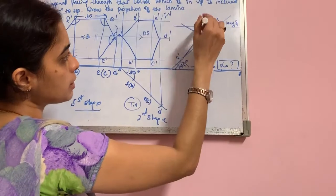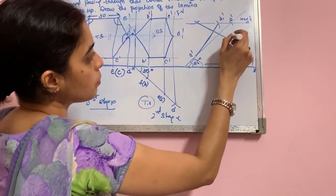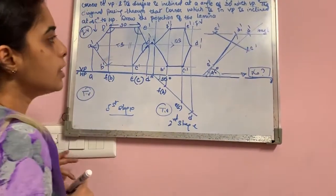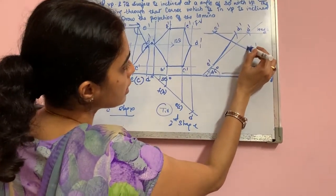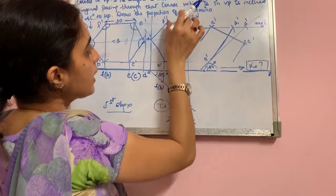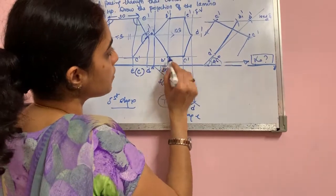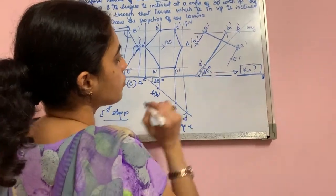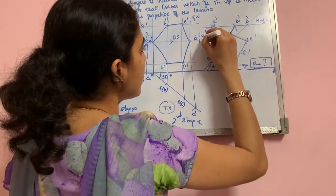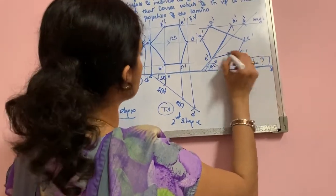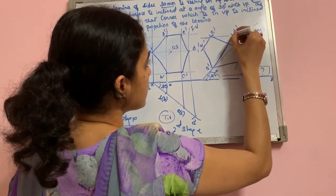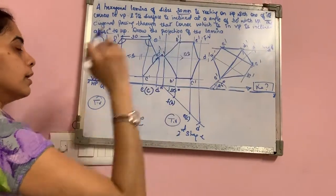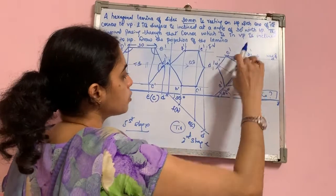From D dash, measure to E dash and cut an arc. From D dash to C dash, measure and cut an arc. You get point E dash and point C dash. Similarly, draw a perpendicular line from these two. Measure E dash to F dash and cut an arc. Measure C dash to B dash and cut an arc. You get F dash and B dash. A dash is already fixed. Join A dash to B dash, B dash to C dash, C dash to D dash, D dash to E dash. You have now shifted the apparent shape of the front view of the hexagonal lamina to the beta angle.